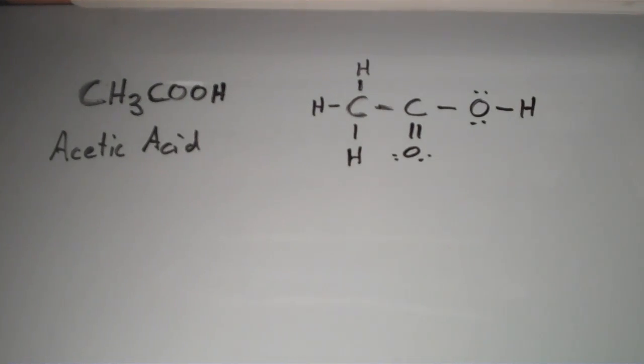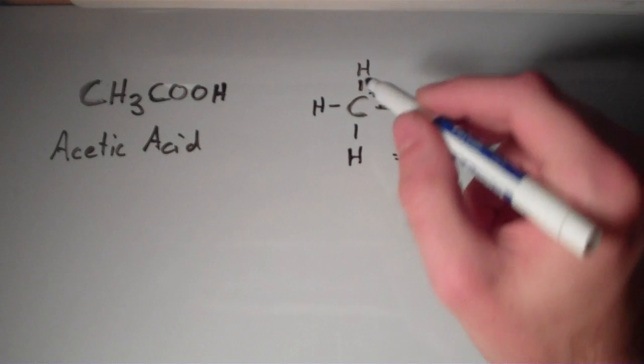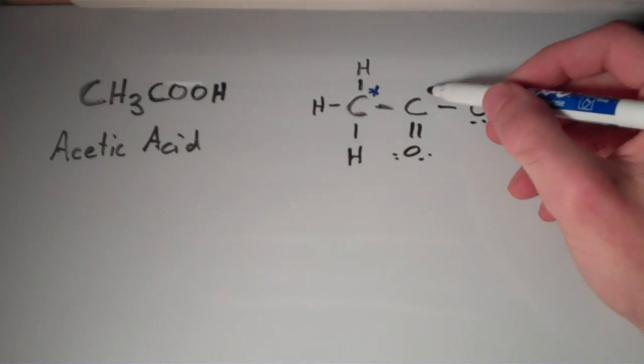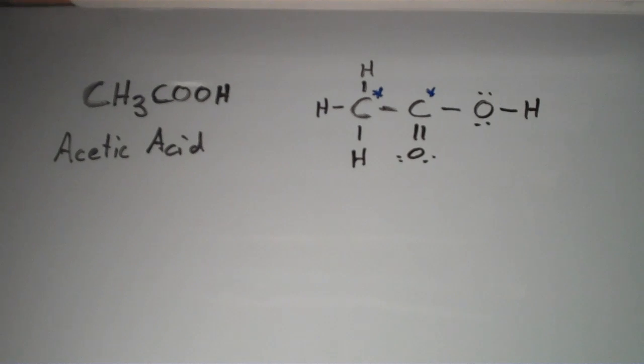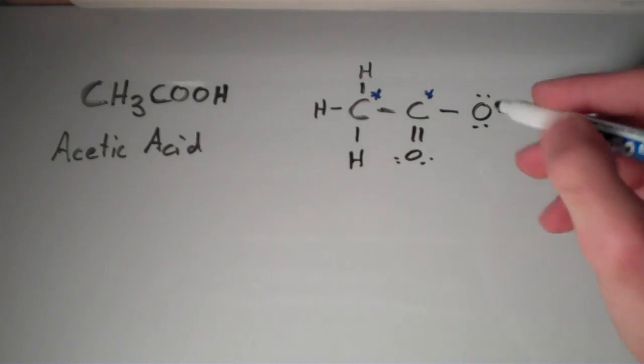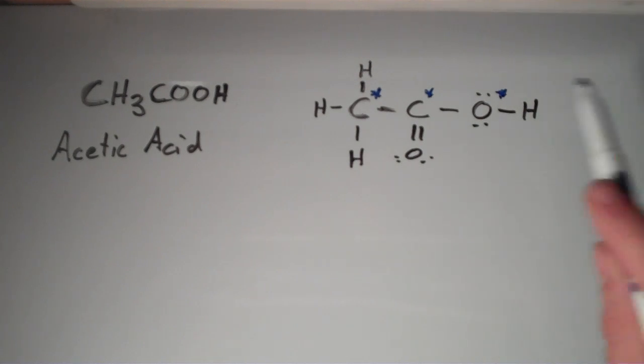So let's find out what our central atoms are. So, this one's definitely a central atom because it has four electron groups on it. This carbon here is also a central atom because it has three electron groups on it. And this oxygen is also a central atom because it has four electron groups on it, two bonding pairs and two lone pairs. So we have three central atoms in this molecule.